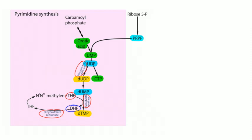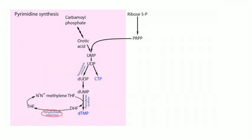These three enzymes are targeted by useful drugs. Dihydrofolate reductase is inhibited by trimethoprim in prokaryotes and methotrexate in eukaryotes. Methotrexate is a folic acid analog — it inhibits dihydrofolate reductase, preventing regeneration of tetrahydrofolate, which slows thymidine production so you can't make DNA.